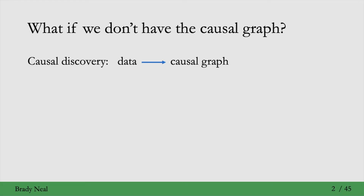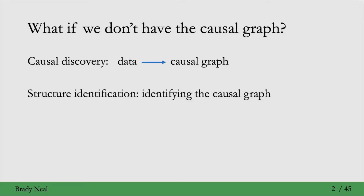But what if we don't have the causal graph? That's what causal discovery is here for. With causal discovery, our goal is to start from just data and then learn the causal graph from that data. Then if we wanted to infer causal effects from there, we can apply stuff we've learned earlier in the course. We're going to have a new definition — structure identification — which is about whether we can identify the causal graph, rather than causal estimates.